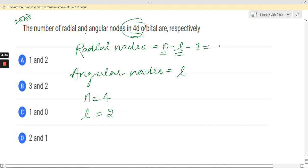So 4 minus 2 minus 1, finally we are having 1. So radial node equals 1 and angular node equals 2. So A is the correct option.